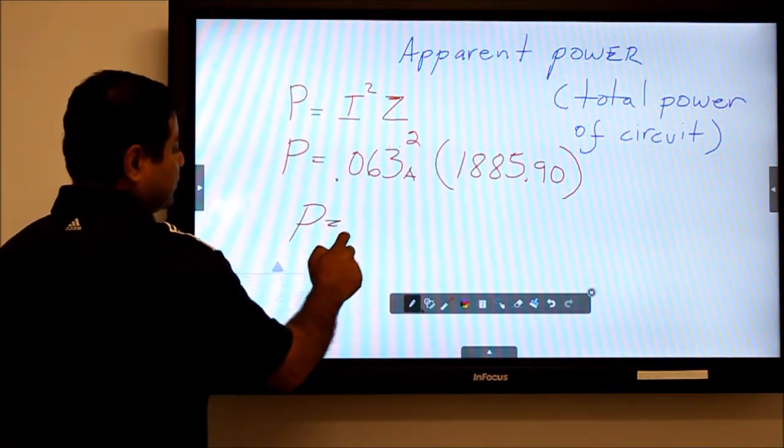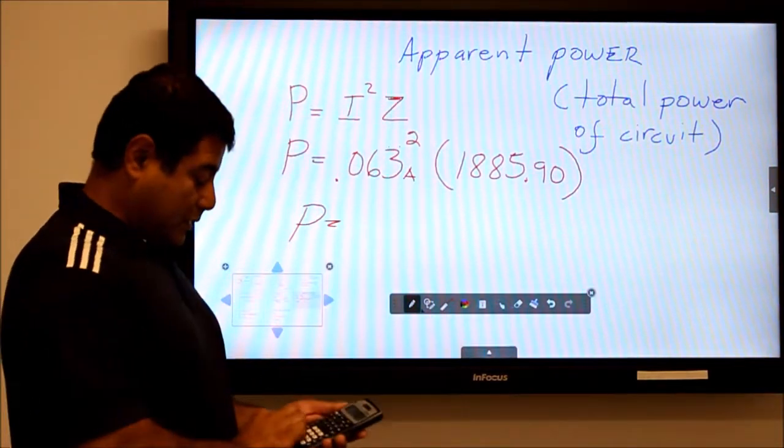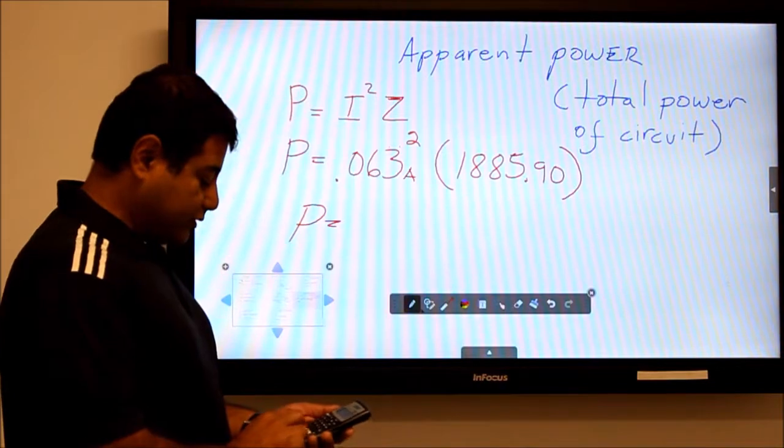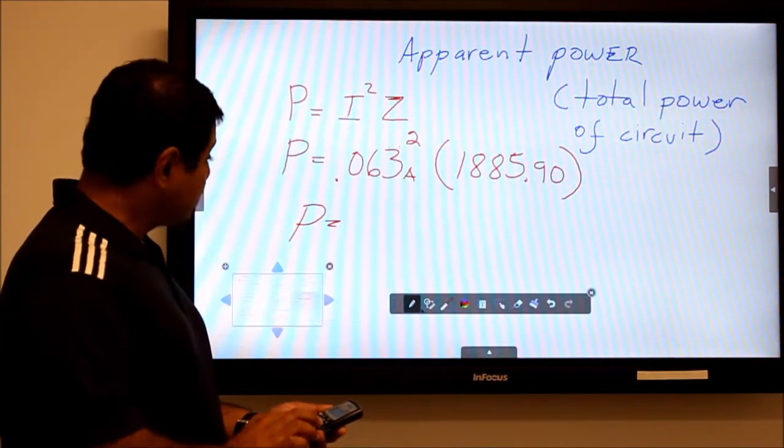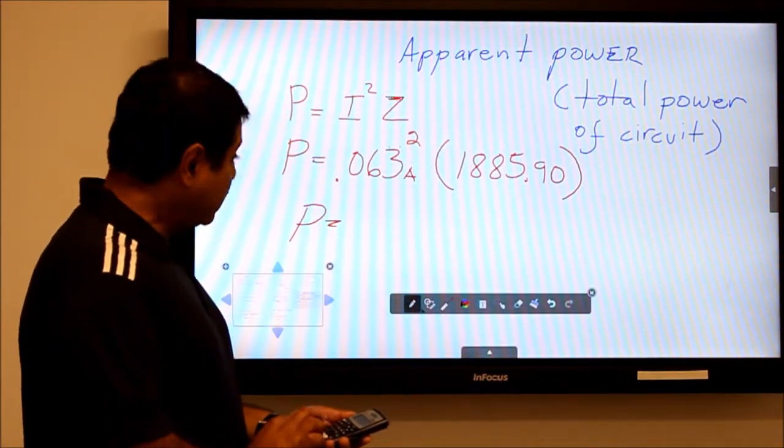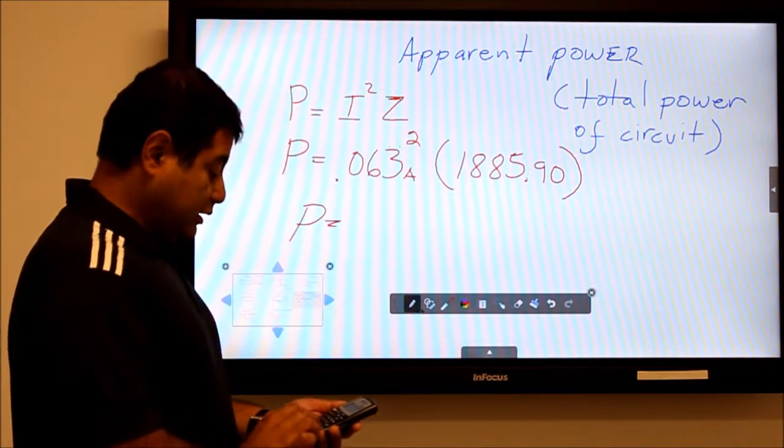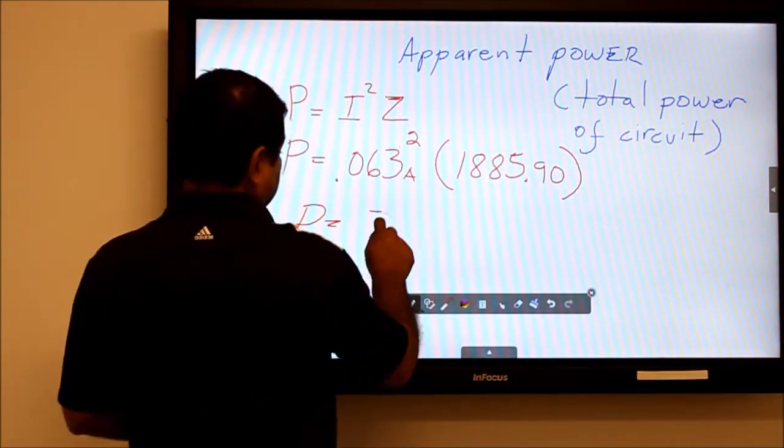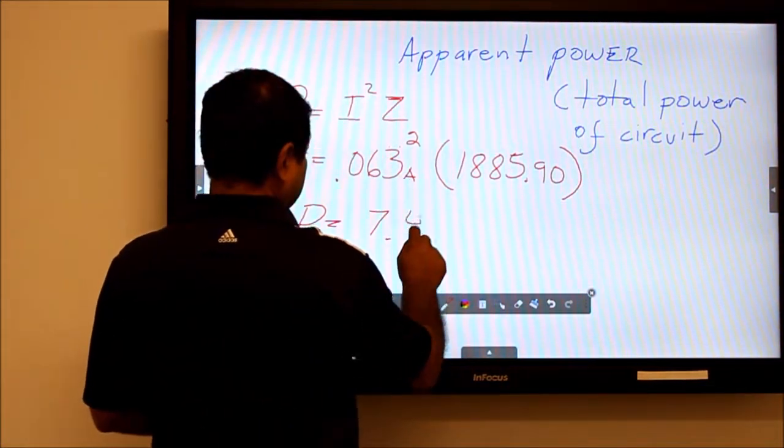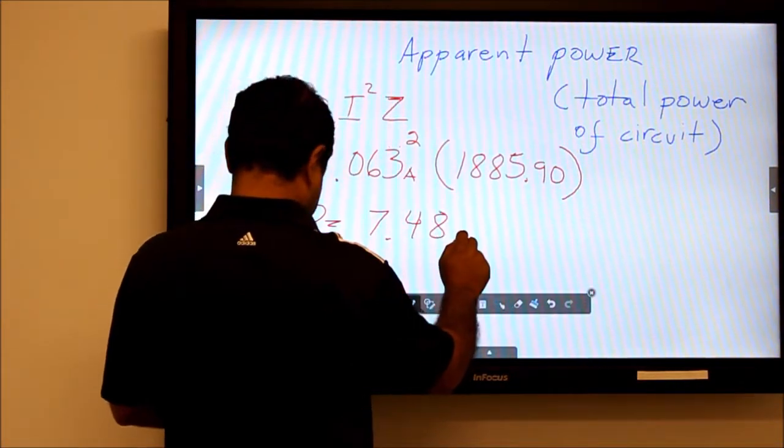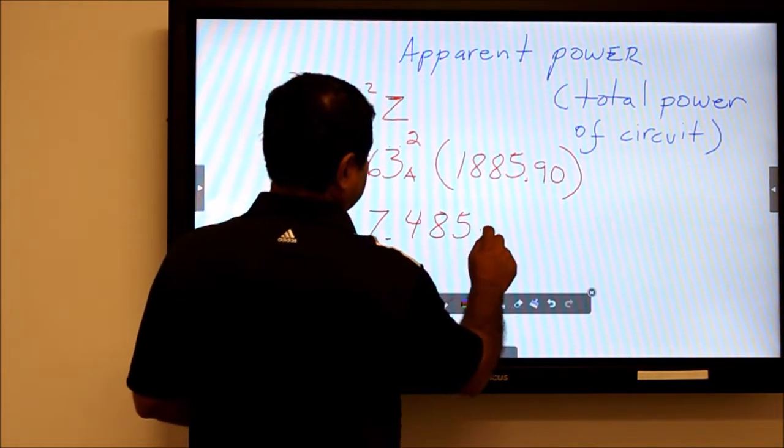Let's get our calculator and see what we get. We have 0.063 squared times 1885.90, and I get 7.485 watts.